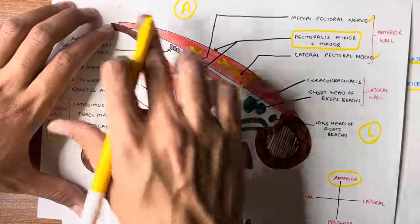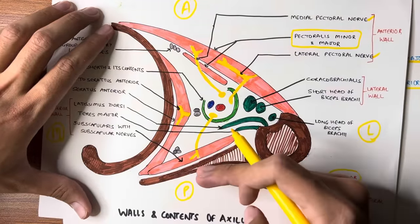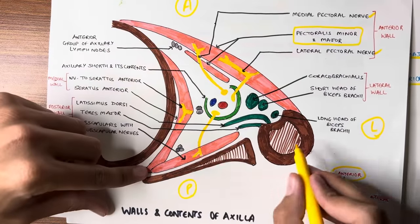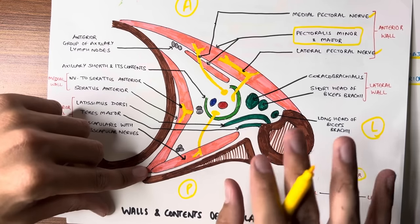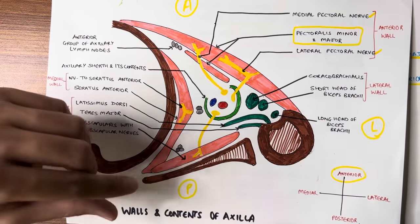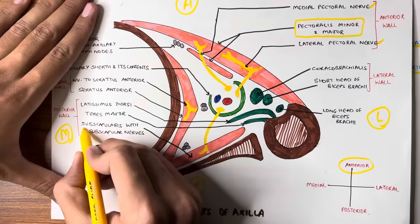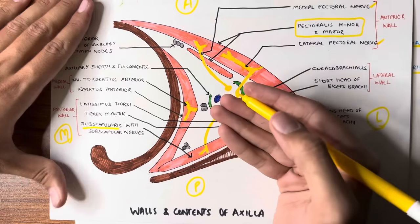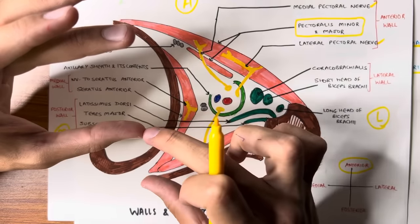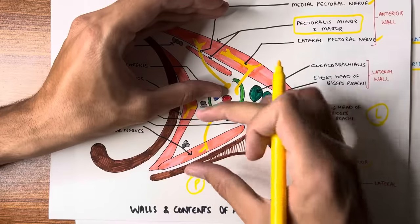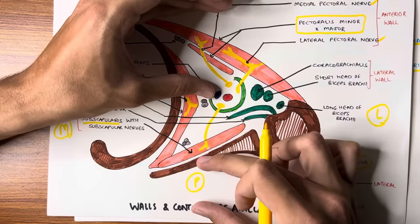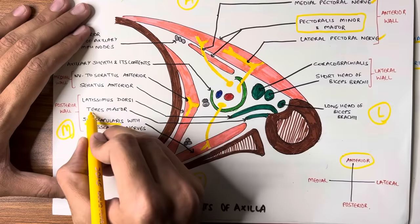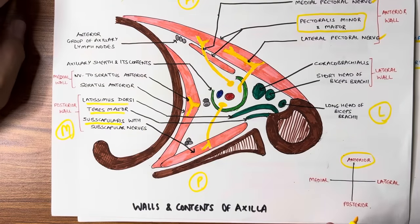Now let's talk about the posterior wall. The muscles originating and going towards the humerus from behind form the posterior wall of the axilla. Number one: subscapularis. The posterior wall from top to bottom — superiorly subscapularis, then teres major, then latissimus dorsi. These three muscles form the posterior wall. So: subscapularis is most superior, teres major is under it, and latissimus dorsi is below that.